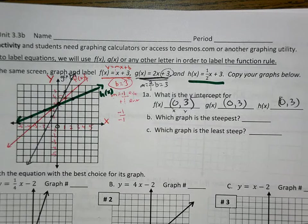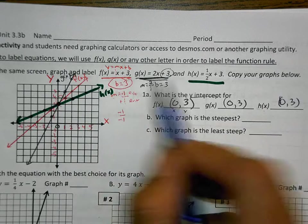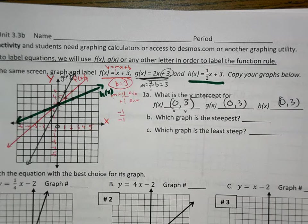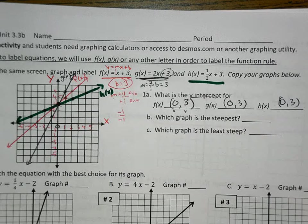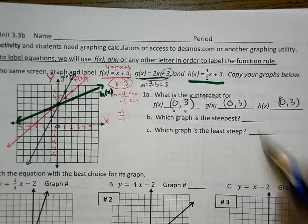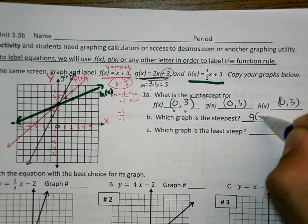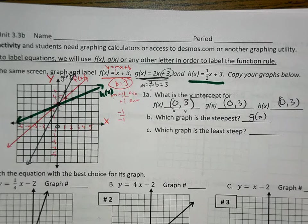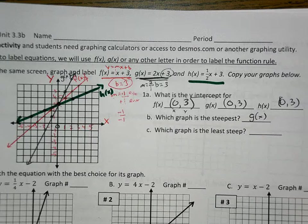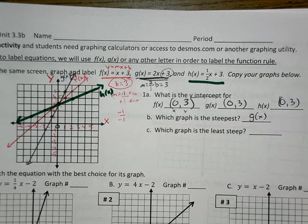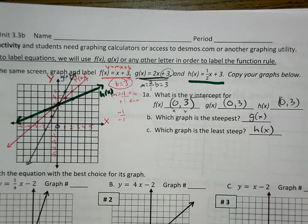Then it asks, which graph is the steepest? And all you have to do here, since we've named them F of X, G of X, and H of X, is you're going to pick which one is the steepest. F of X, G of X, or H of X, which one? G of X. Which one is the least steep? Piece of cake. Piece of cake, right?